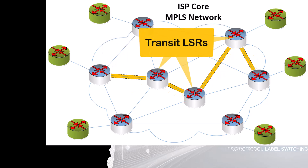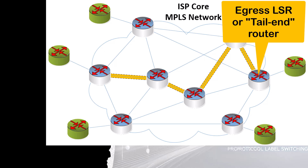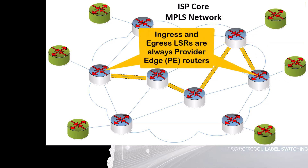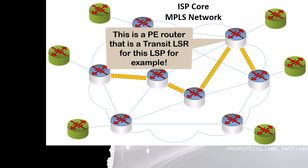The ingress router also assigns the initial MPLS label to packets entering the path. Next, we have the transit LSRs — these are the intermediate routers that forward packets along the LSP, also known as the P or provider routers of the MPLS infrastructure. Each transit router swaps the incoming MPLS label with the next label in the LSP, ensuring packets follow the defined path. Finally, we have the egress LSR, also known as the tail-end router, where the LSP ends. The egress router removes the MPLS label and forwards the packet based on its original IP header. Ingress and egress LSRs are always PEs, while transit LSRs are almost always P routers, though PE routers can also play the role of a transit LSR.